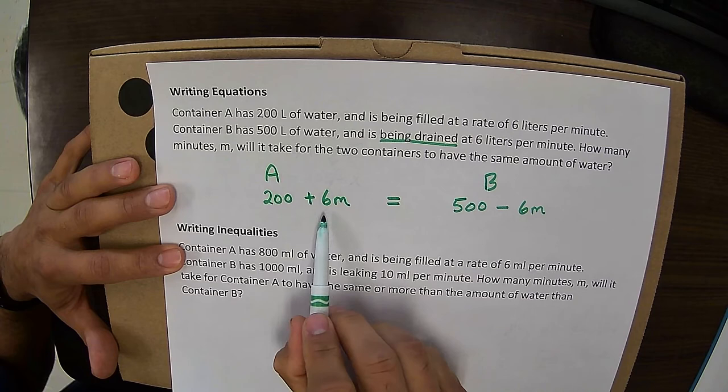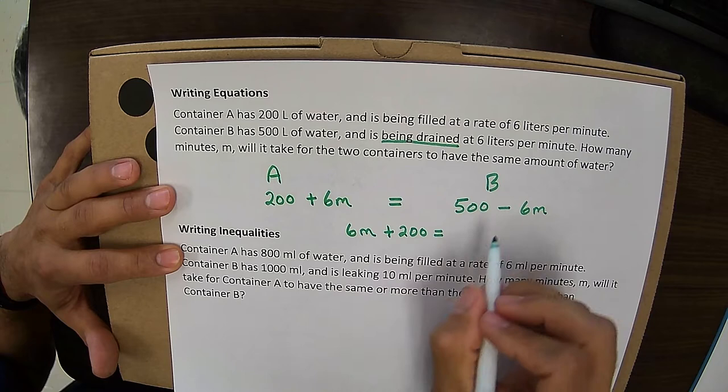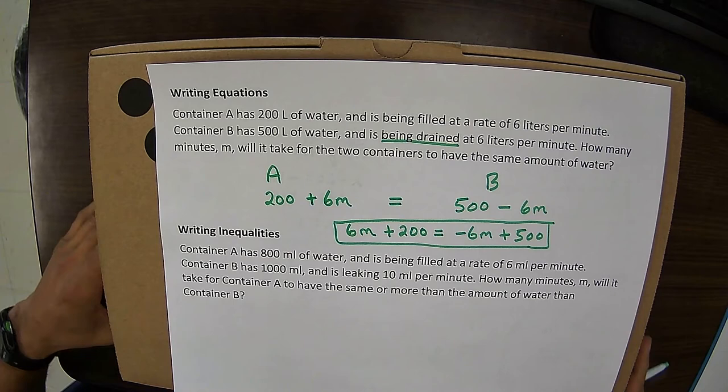An important thing to note here. Normally you write the variable first. So this equation, or if we're going to be on a test or something, you're more likely to see it written with the variable first. Saying 6M plus 200. And this is going to be a negative 6M plus 500. So be prepared for that because that's most likely how you're going to see the answer written.